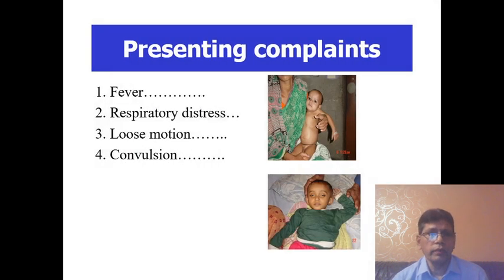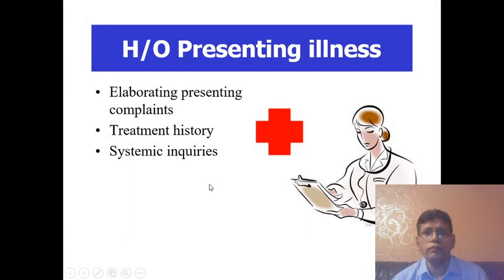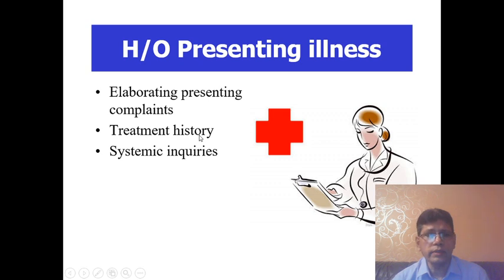Presenting complaints may be one, two, three, or four — for example fever, respiratory distress, loose motions, or convulsion with duration. History of present illness elaborates the presenting complaints, including treatment history for the illness and systemic inquiry. The doctor should ask specific questions from each system — for example, in the nervous system: convulsion; respiratory system: cough or respiratory distress; cardiovascular system: exertional dyspnea.